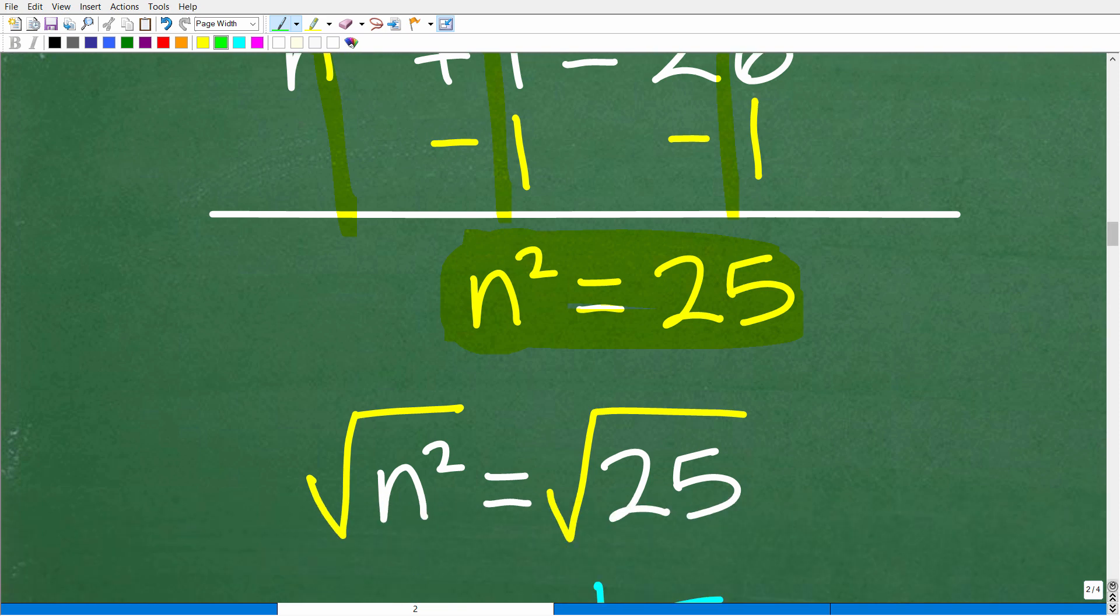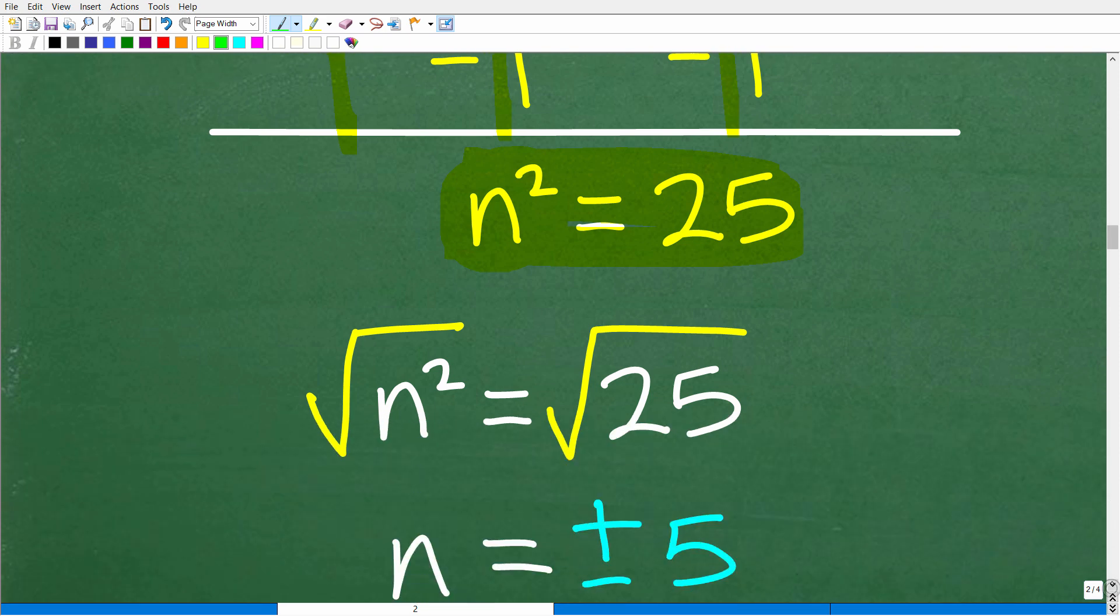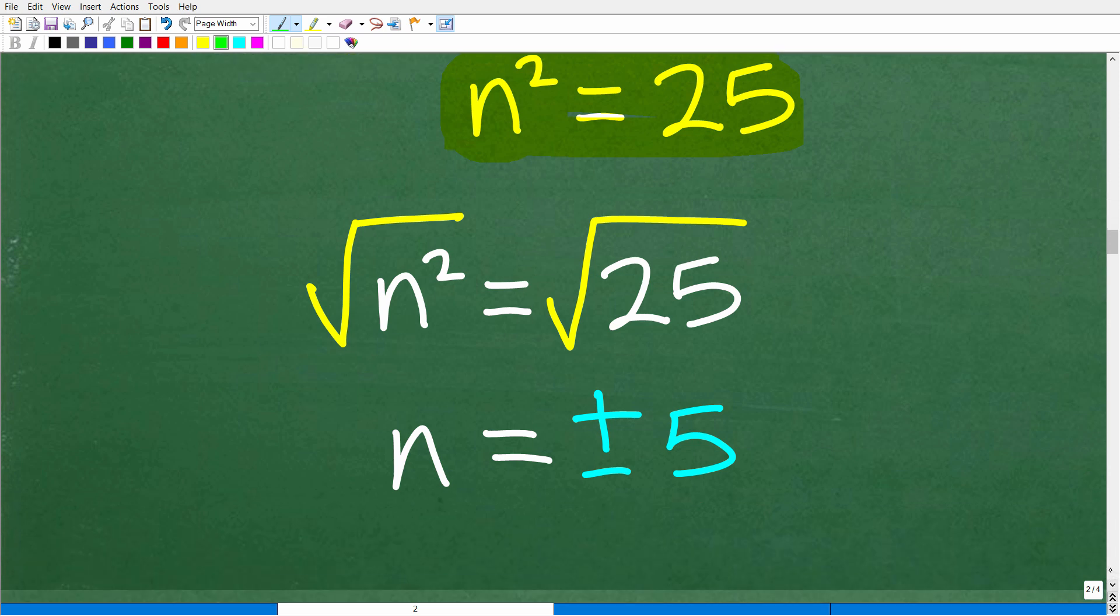To solve for n, all we have to do is take the square root of both sides of the equation. The square root of n squared is n, and the square root of 25 is both positive and negative 5.